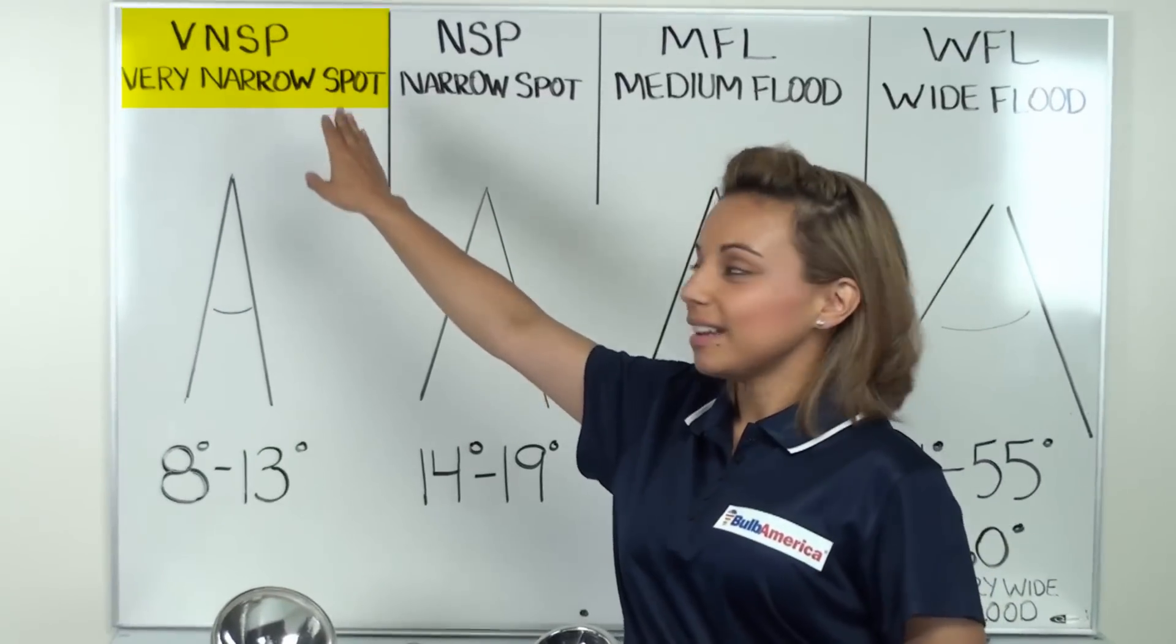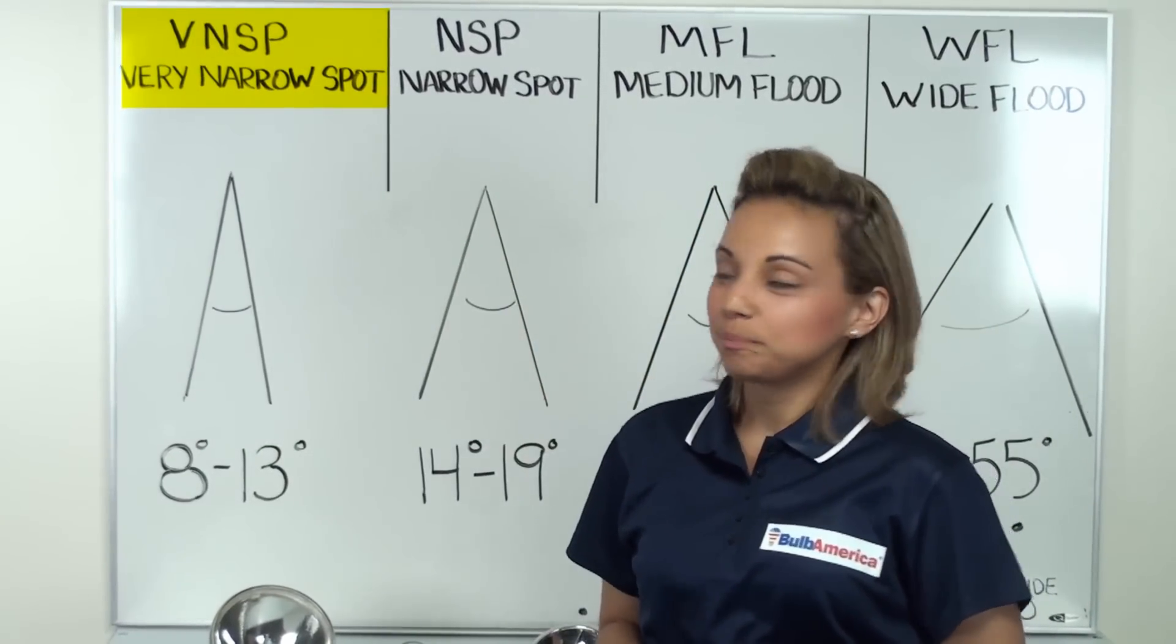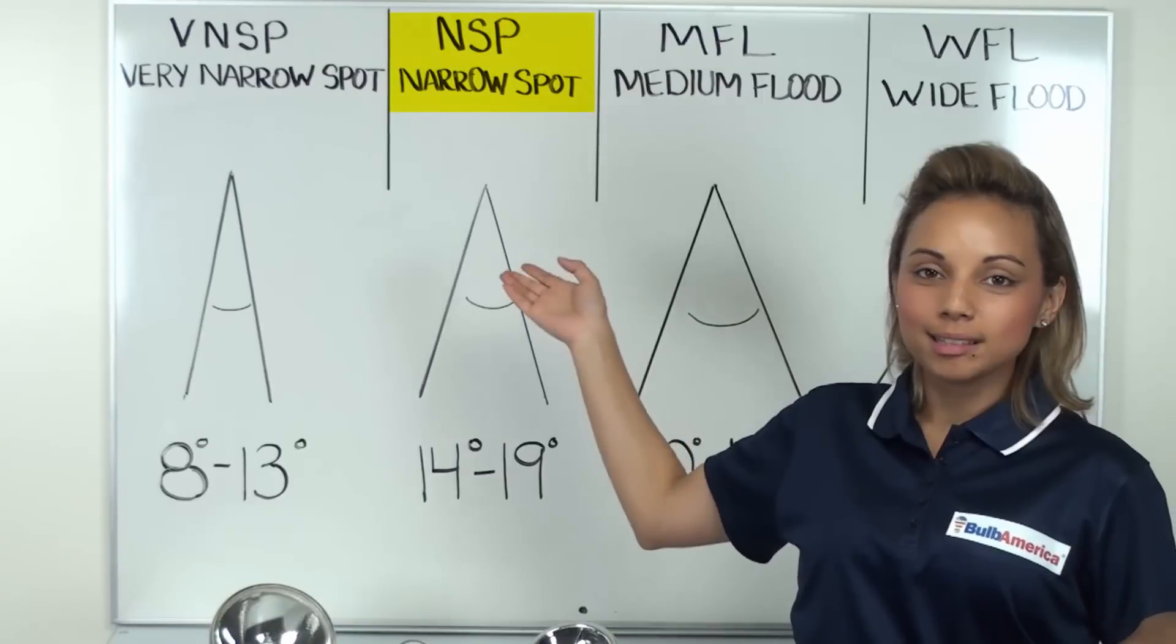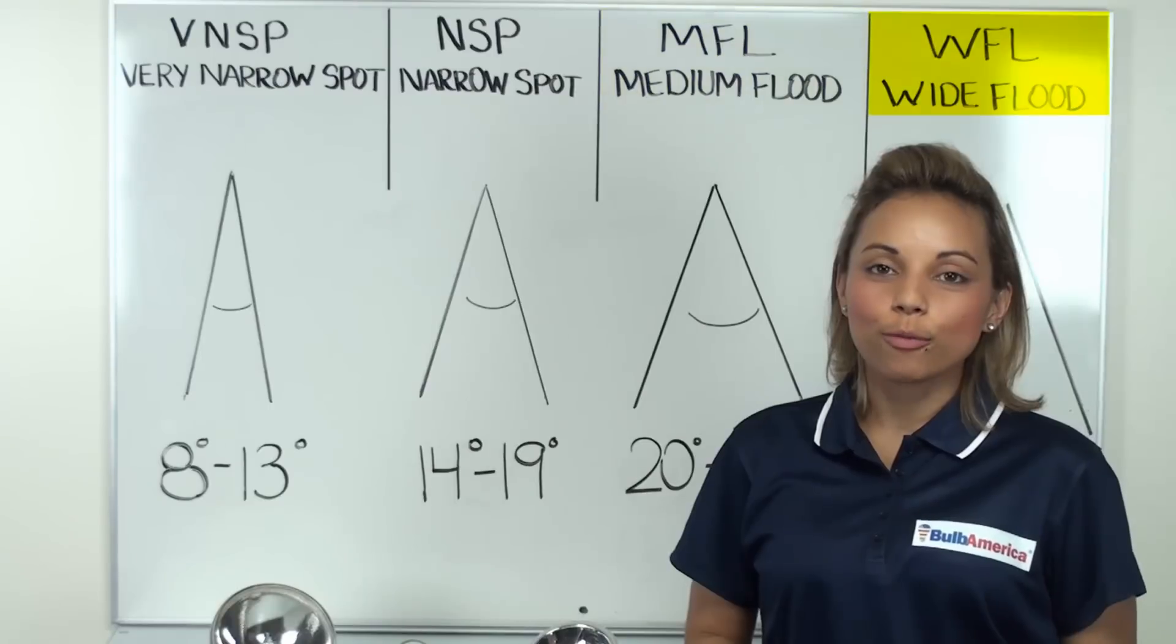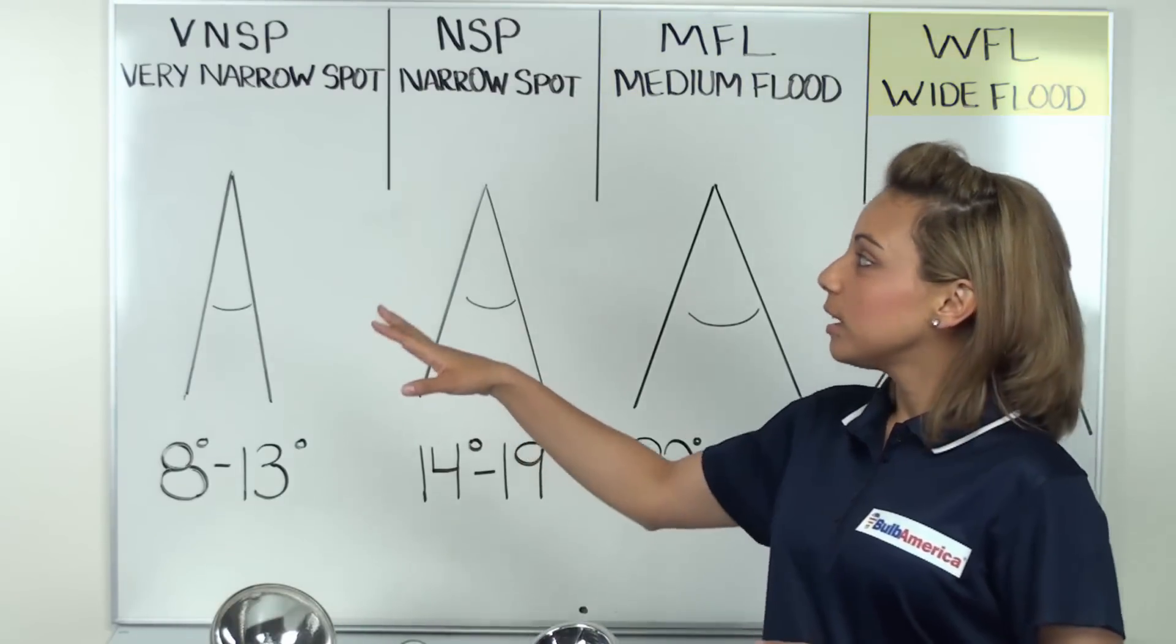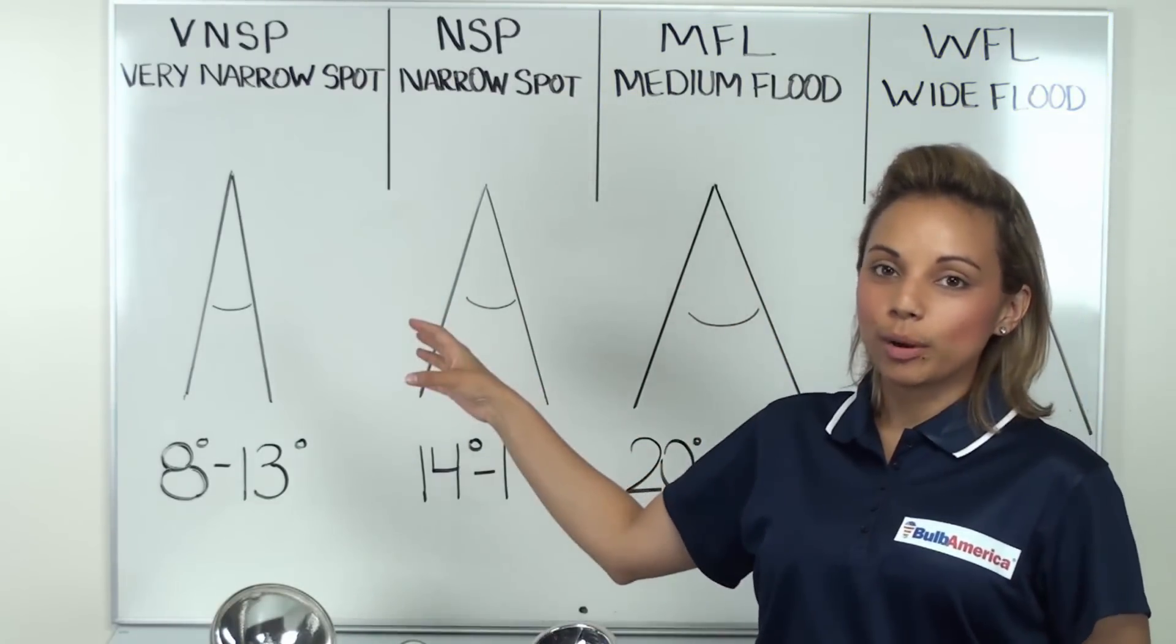VNSP stands for Very Narrow Spot, and NSP stands for Narrow Spot. MFL stands for Medium Flood, and WFL for Wide Flood. So these are the general beam spreads.